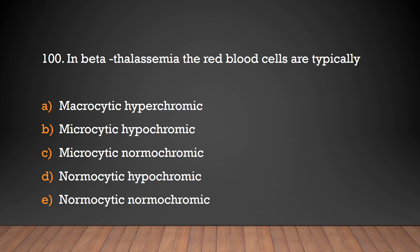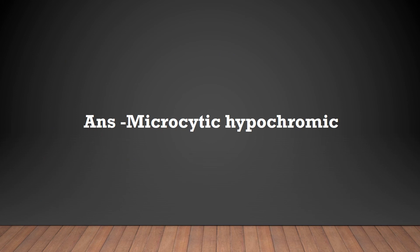In beta thalassemia, the red blood cells are typically: macrocytic hyperchromic, microcytic hypochromic, microcytic normochromic, normocytic hypochromic, normocytic normochromic. Answer: Microcytic hypochromic.